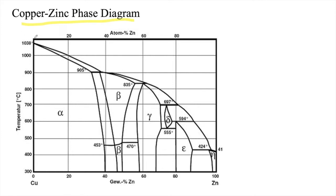Melting point of copper is 1038 degrees Celsius and melting point of zinc is 410 degrees Celsius.